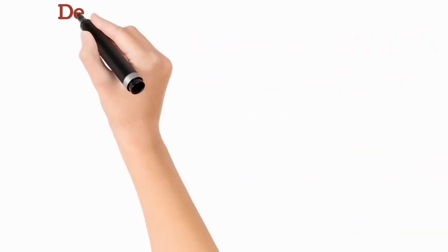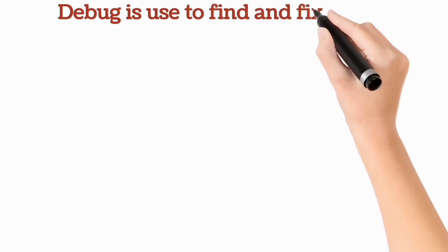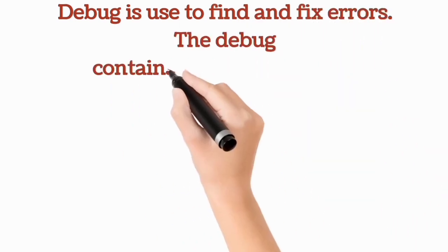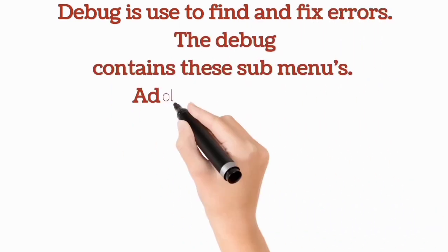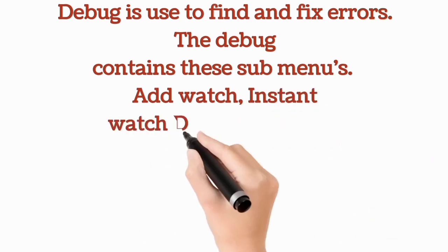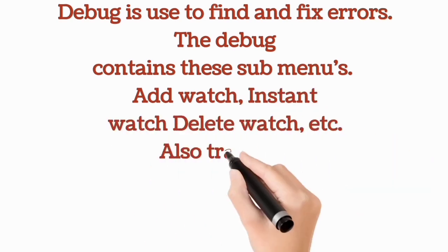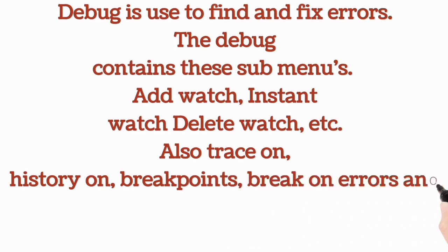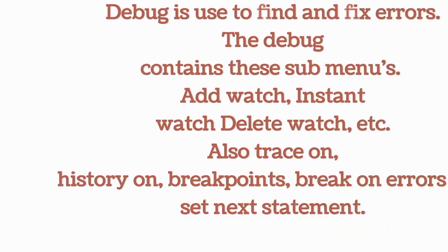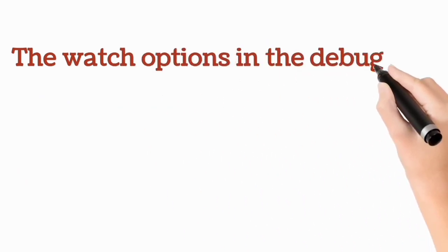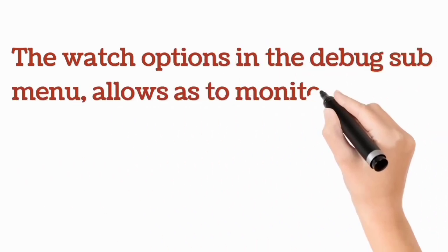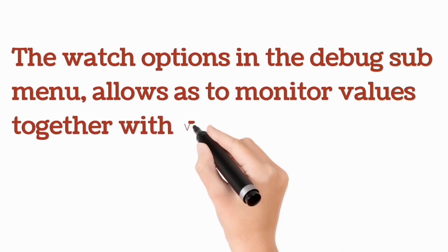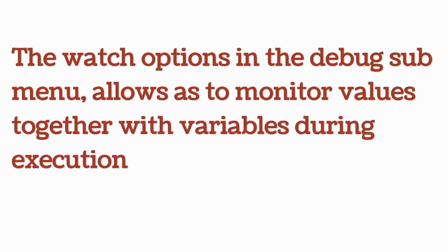Debug is used to find and fix errors. The debug contains these submenus: Add Watch, Instant Watch, Delete Watch, etc. Also trace on, history on, break points, break on errors and set next statement. The watch options in the debug submenu allows us to monitor values as variables during execution.